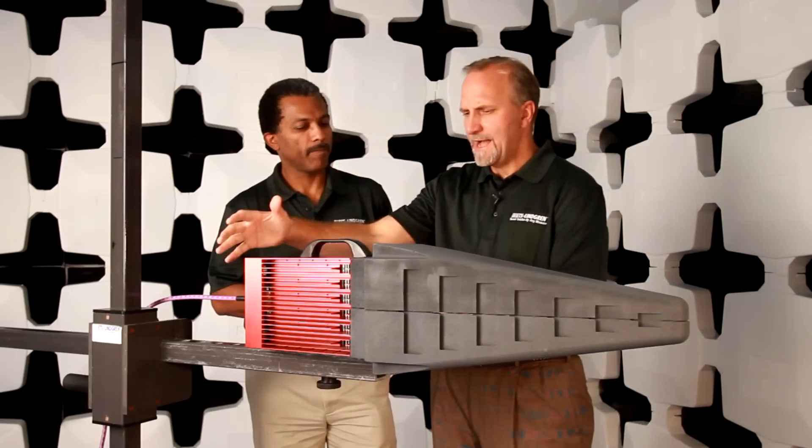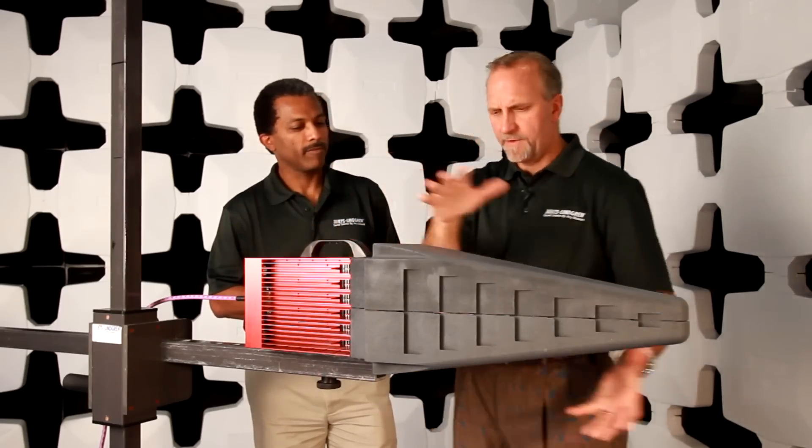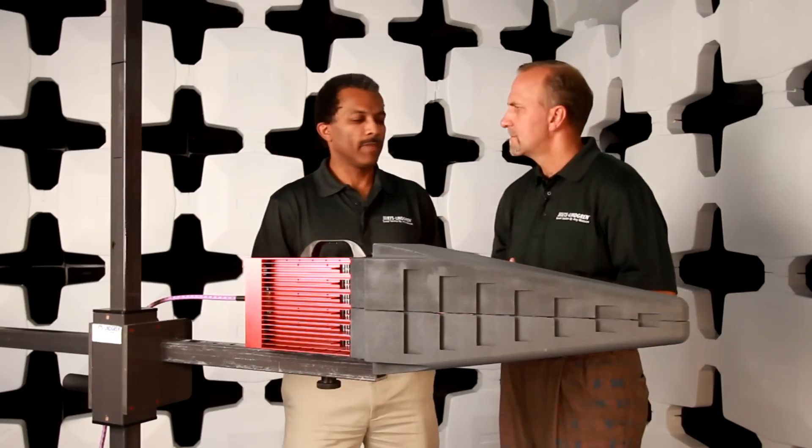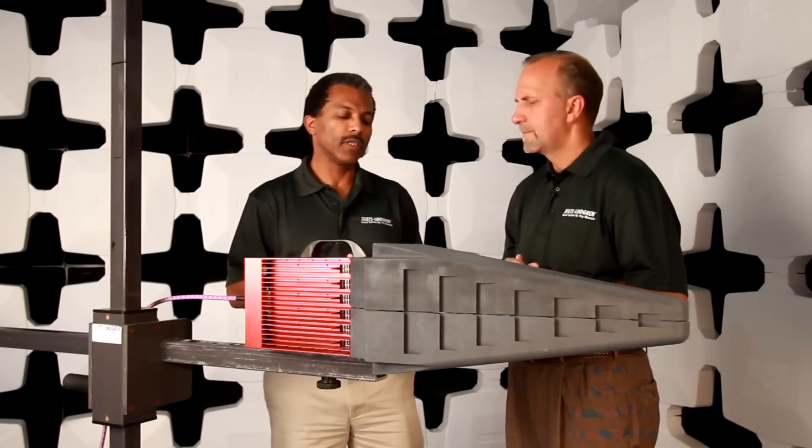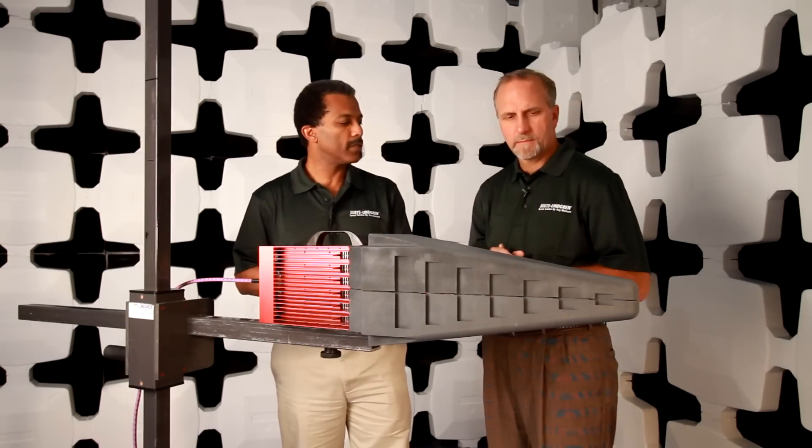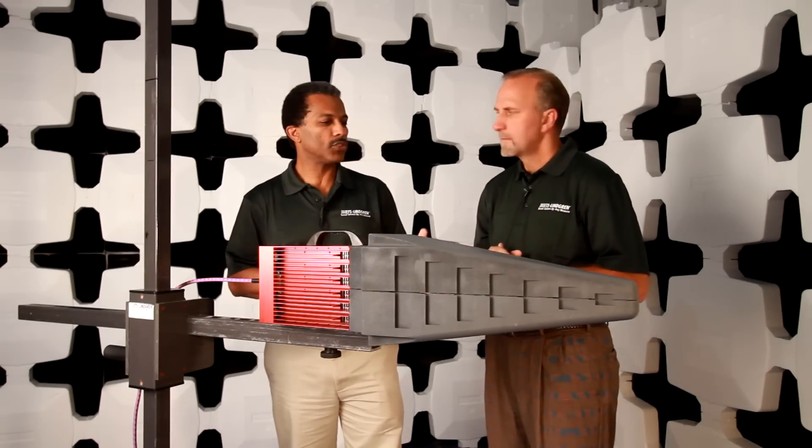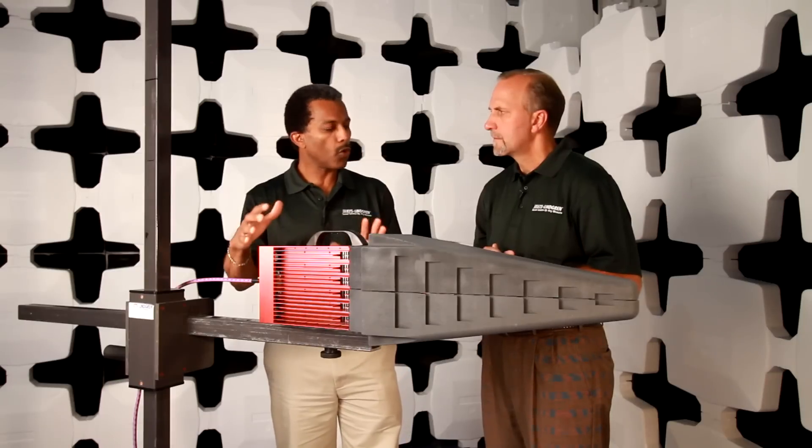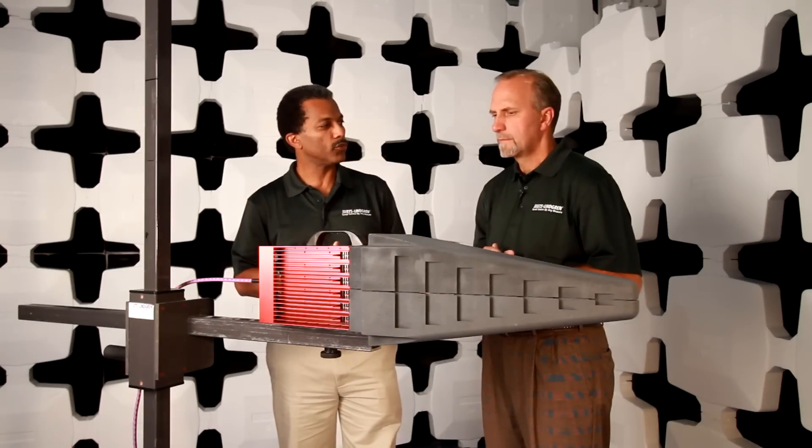So this big aluminum block here, doesn't that have an impact on the overall performance of the system? It does and that's a very good question. The system is designed to take advantage of the fact that you've got this large metallic back plane which acts as a reflector for the array that enhances the gain of the unit and gives us the benefit in being able to generate the fields that we need with a small compact amplifier module.